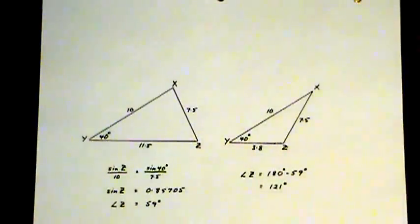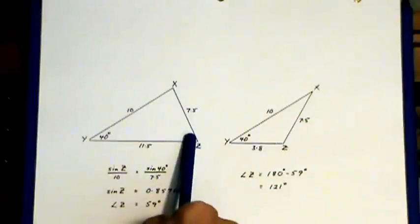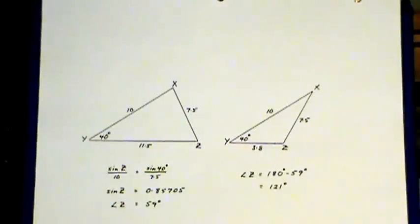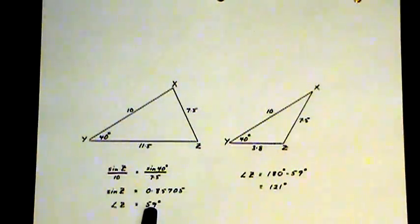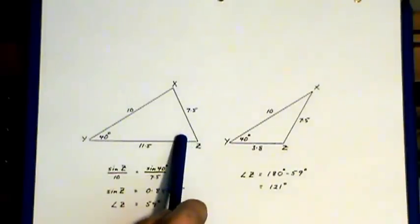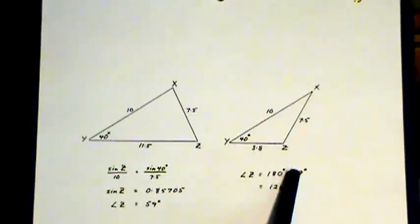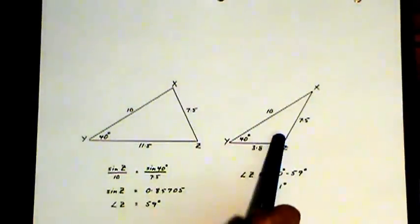To complete this, if you want to solve for angle z, you'll notice that if you set the sine law up for both of these and solve for angle z, since your calculator always gives you an acute angle when you use your sine inverse button, you will get 59°, which is the 59 for this triangle. If you want the angle for the second triangle, you'd have to subtract the 59 from 180 to get 121°.